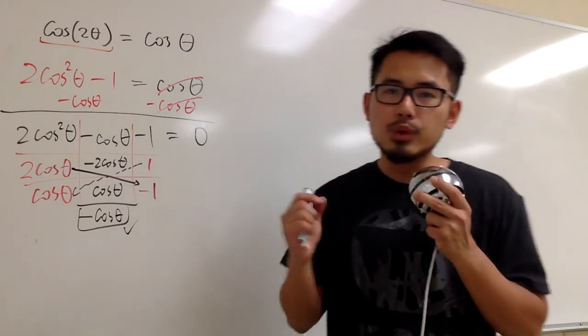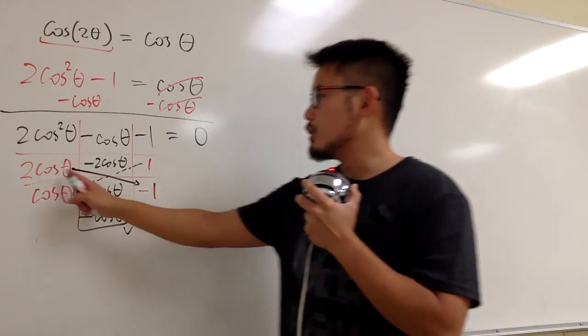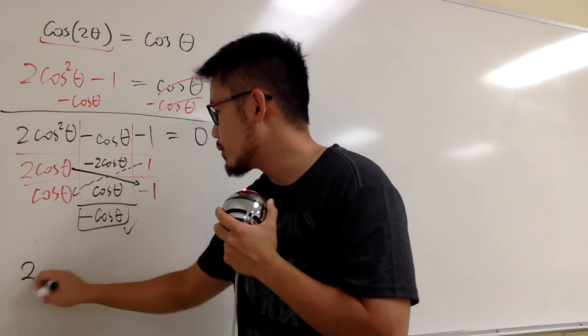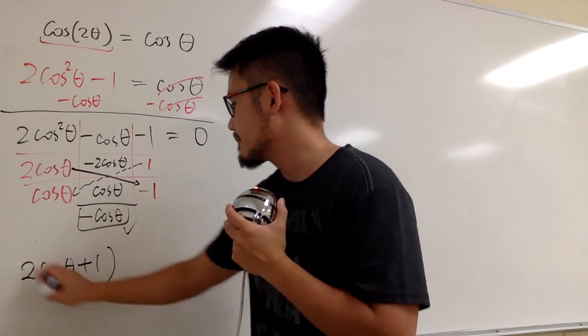And now, this is how we read out the answer from the tic-tac-toe factoring method. You read the answer cross. So the first one, we will end up with 2 cosine θ. This is positive 1, so we add 1. Okay, that's the first factor.